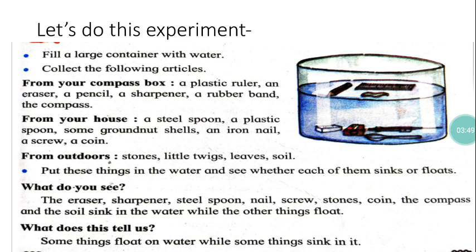What do you see? The eraser, sharpener, steel spoon, nail, screw, stones, coin, the compass, and the soil sink in the water while the other things float. That means, a plastic ruler, pencil, rubber band float on the water.